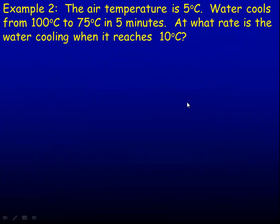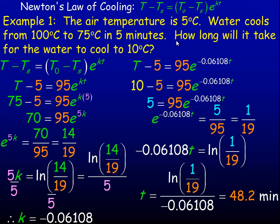In the second example, same water cooling scenario: air temperature is 5 degrees, water cools from 100°C to 75°C in 5 minutes. But now we're asked to find at what rate the water is cooling when it reaches 10 degrees Celsius.